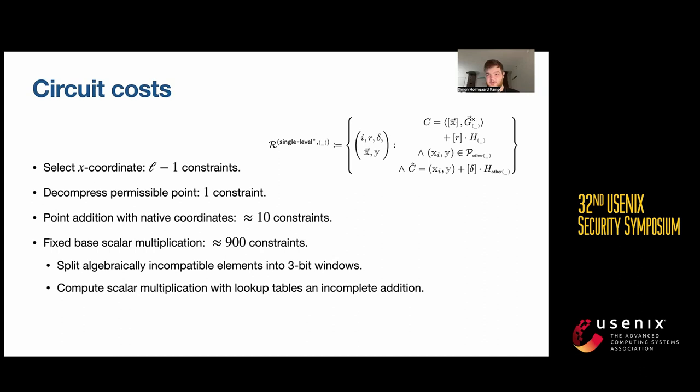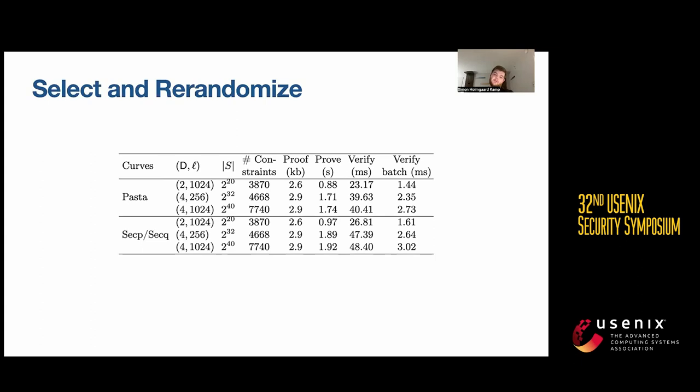Finally, with the implemented benchmark, our select and randomize primitive using Bulletproofs allows us to play with the trade-off between the depth and the branching factor. We found pretty good numbers for sizes of up to 2 to the 40.